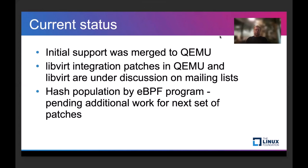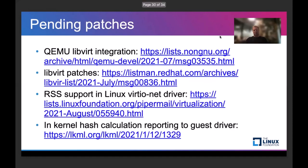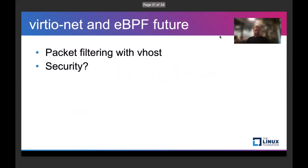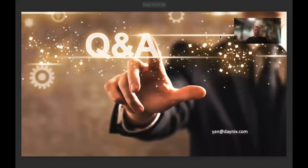What's the current status? Initial support was merged to QEMU. As mentioned, the Libvirt integration patches are under review, and hash population by the BPF program — those patches sent to the Linux kernel — are pending some additional work for the next set of patches. Here you can find the links to the patches. What's in the future? Probably two things we look to do next: first is packet filtering for Vhost, and second are some security features that could be implemented with eBPF. Thank you very much, I'm here to answer your questions.